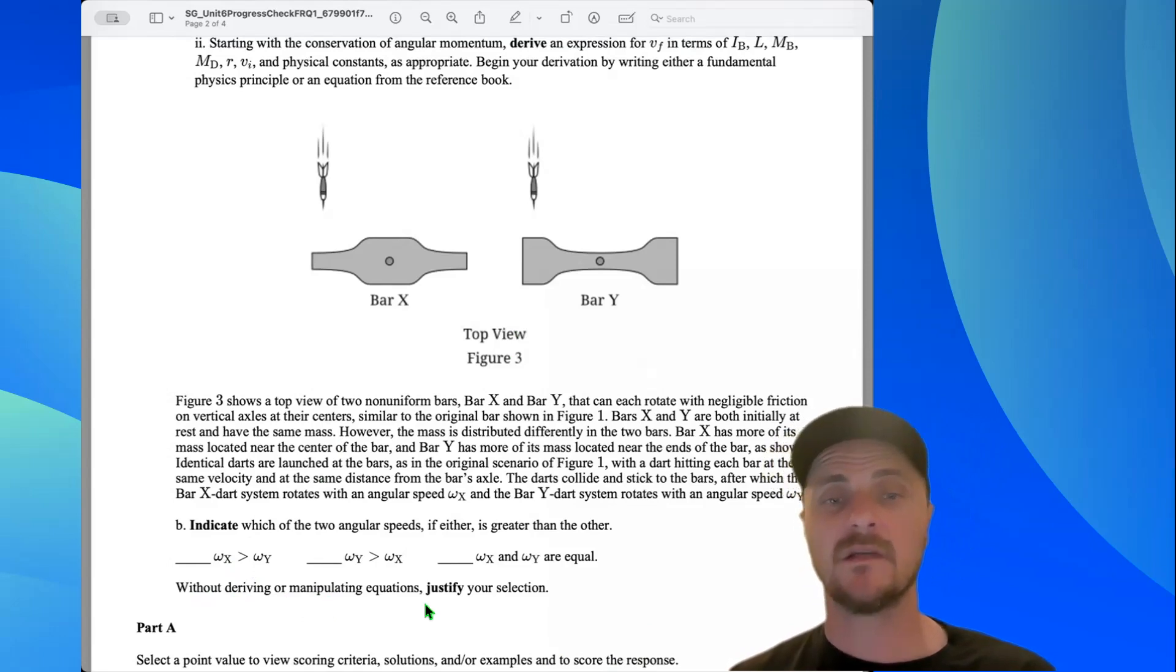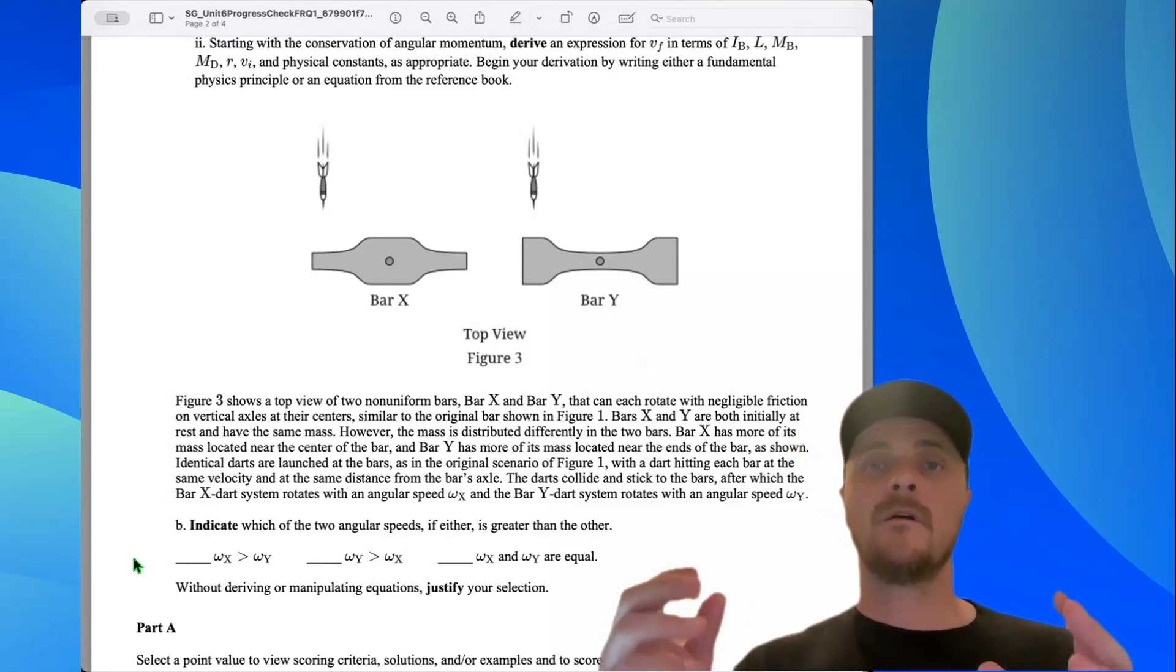So let's check this one and let's talk. Both systems have the same mass dart coming in at the same velocity with the same radius from the axis of rotation. Period. This means both systems have the same initial angular momentum. Period. Since bar X has more of its mass distributed toward the axis of rotation, it has a smaller rotational inertia. Period.